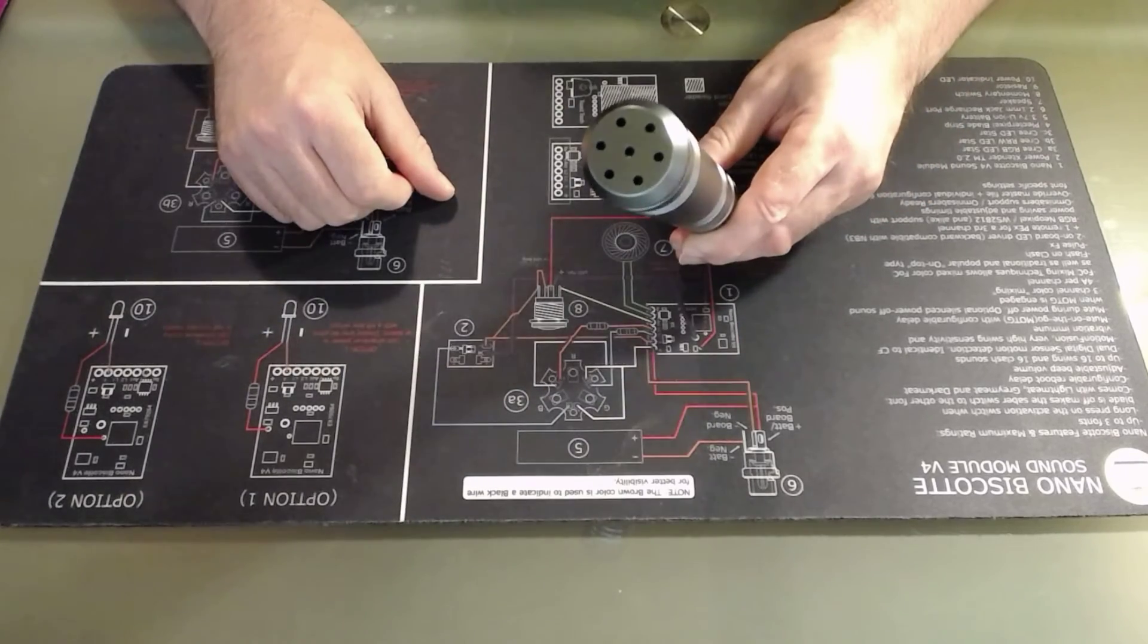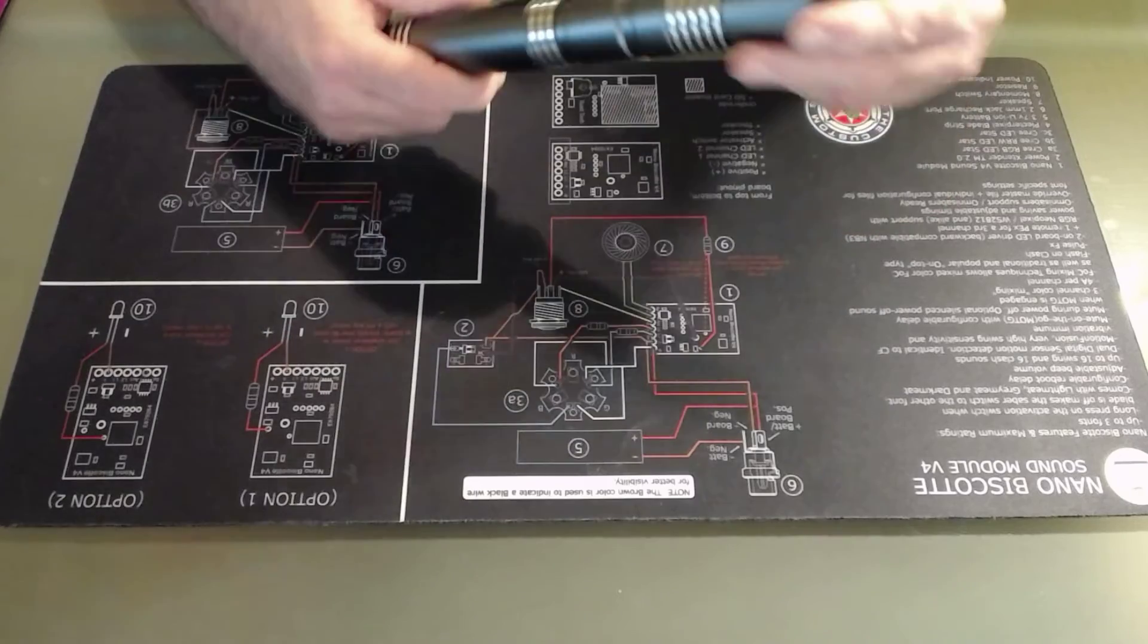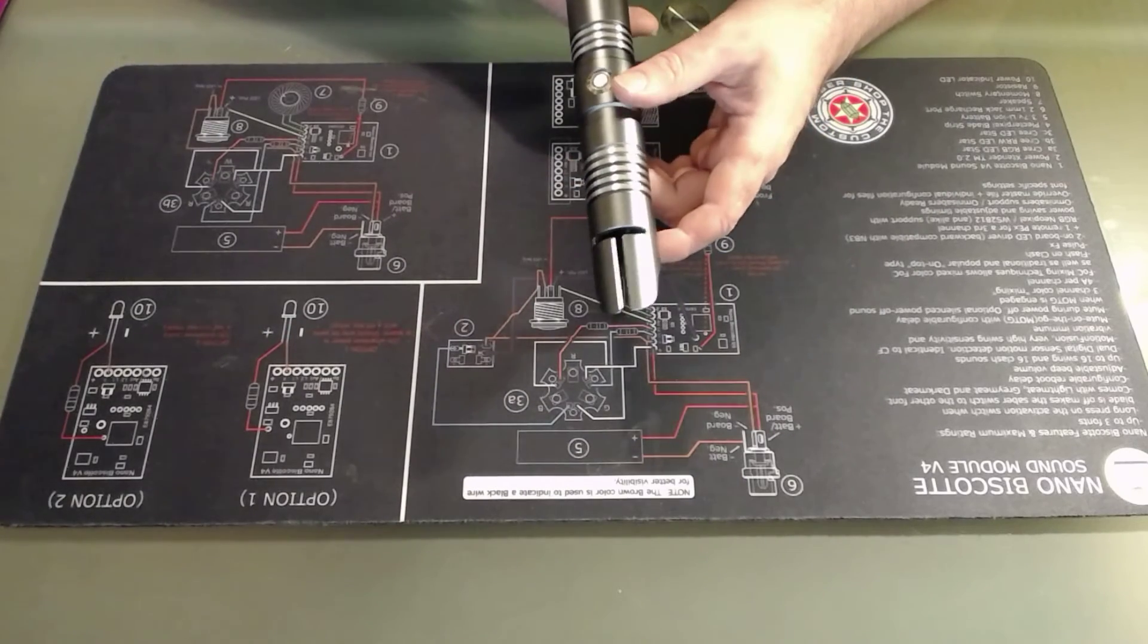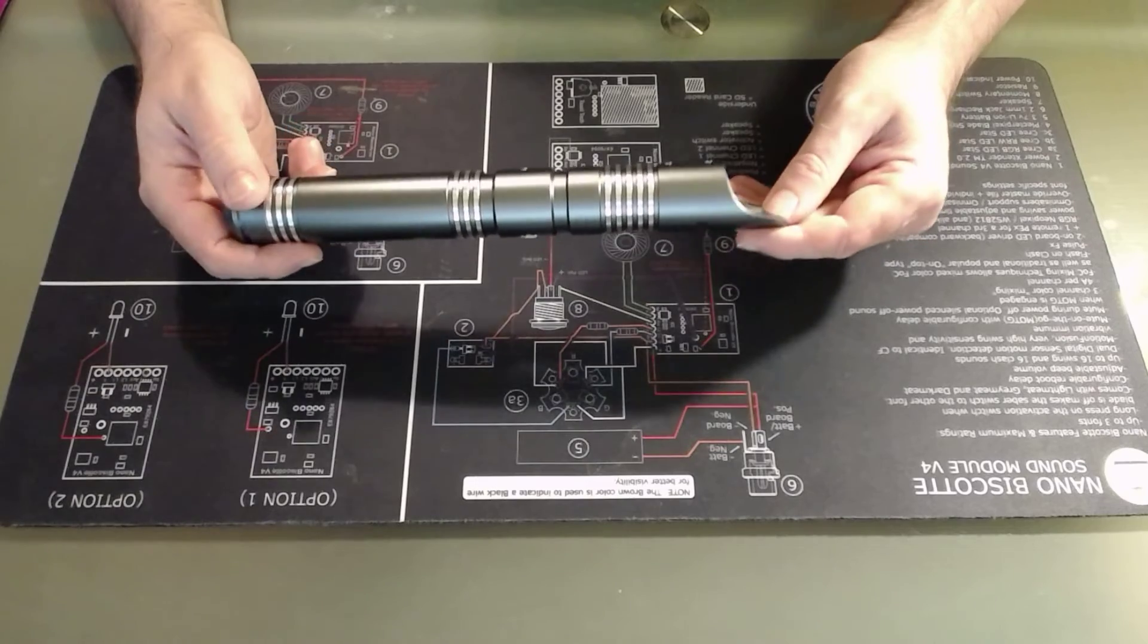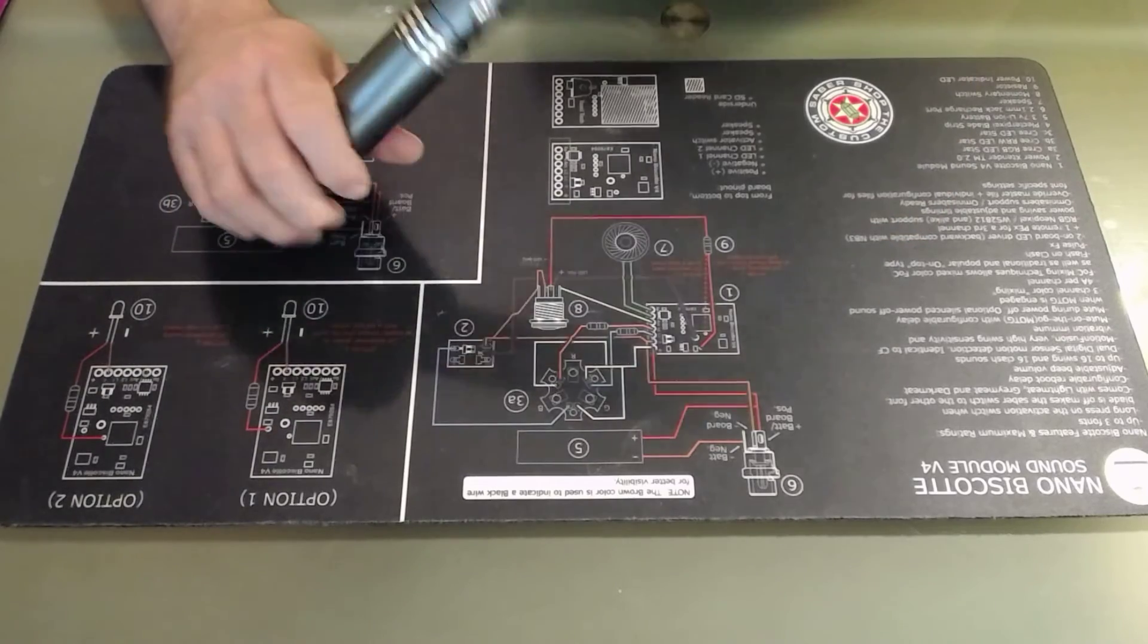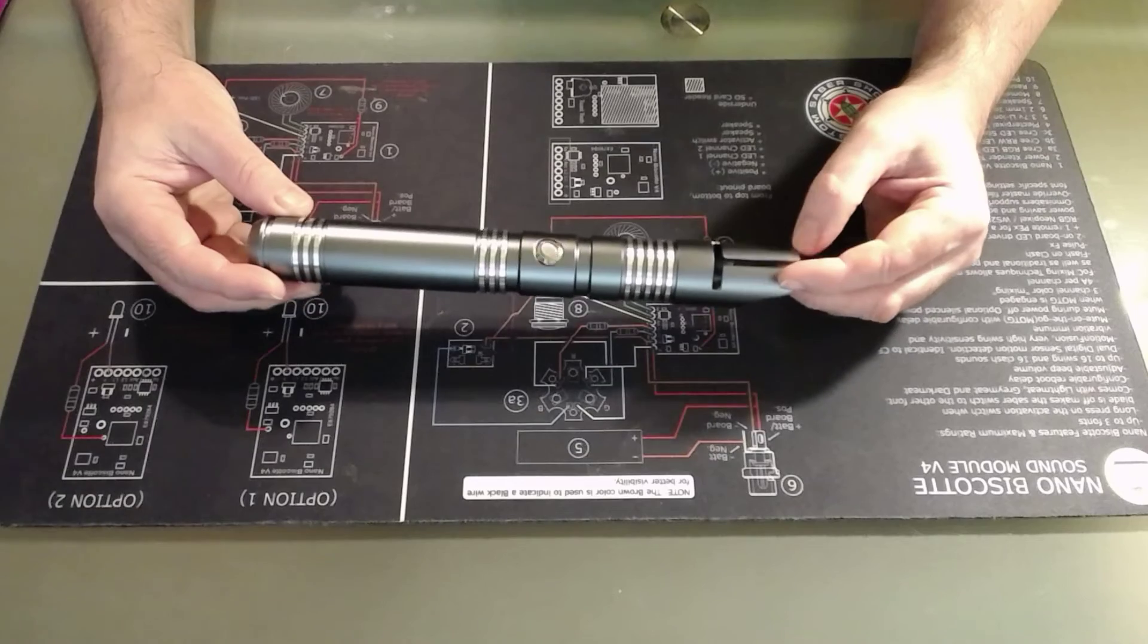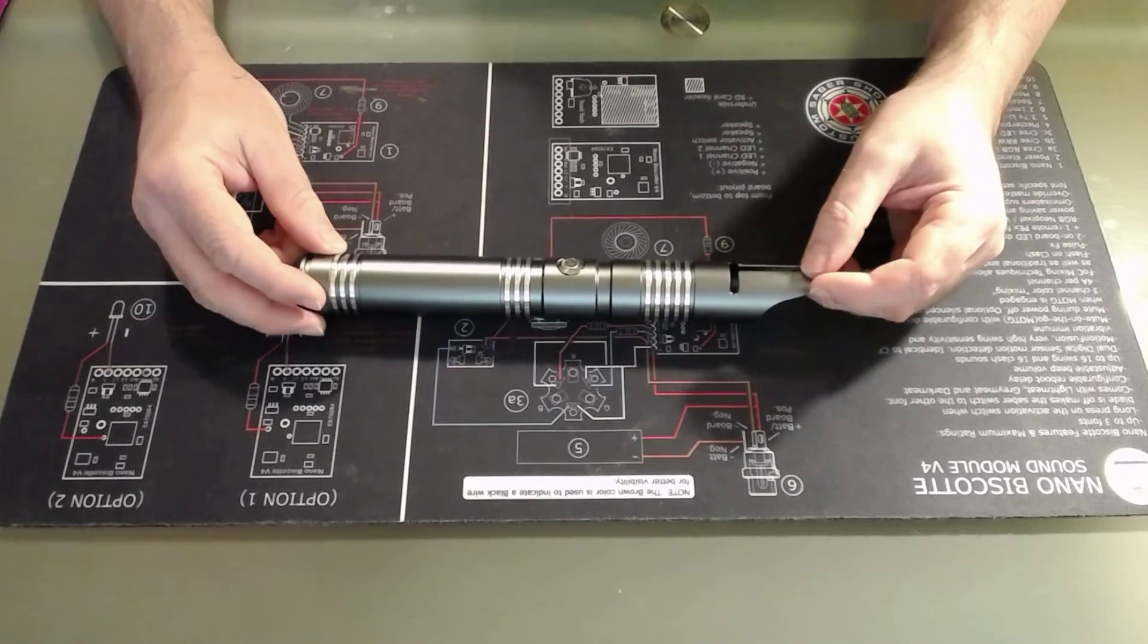So a very simple vented pommel. Obviously a windowed emitter design that's heavily inspired by one of our favorite universe heroes of late. And yeah, quite a good looking Sabre.